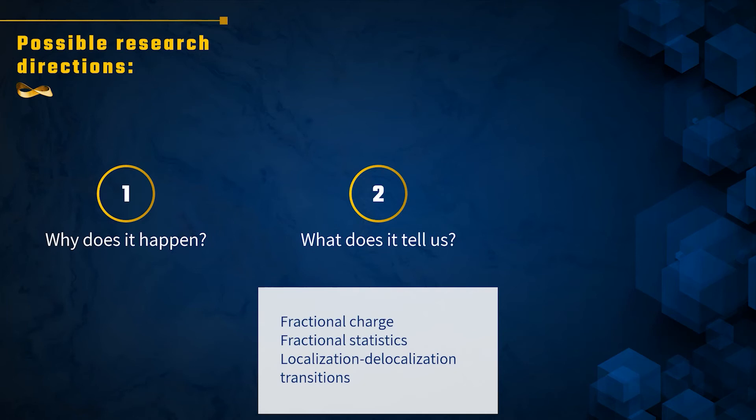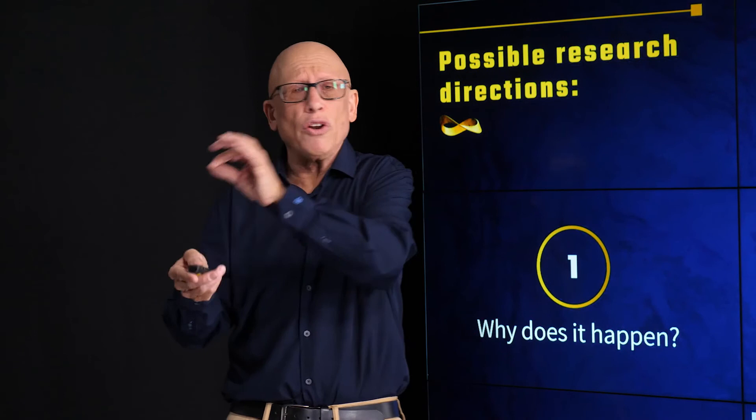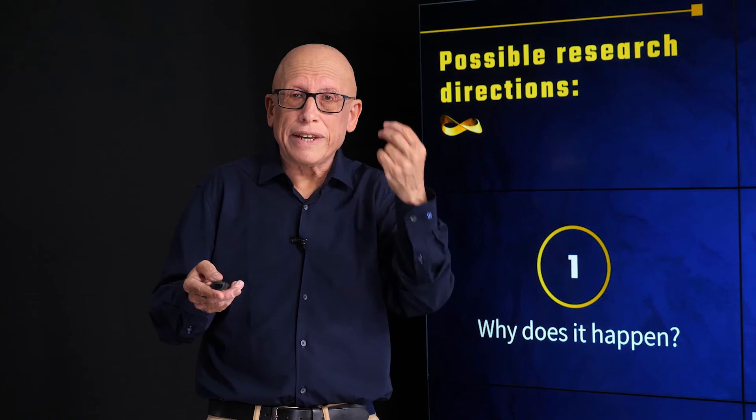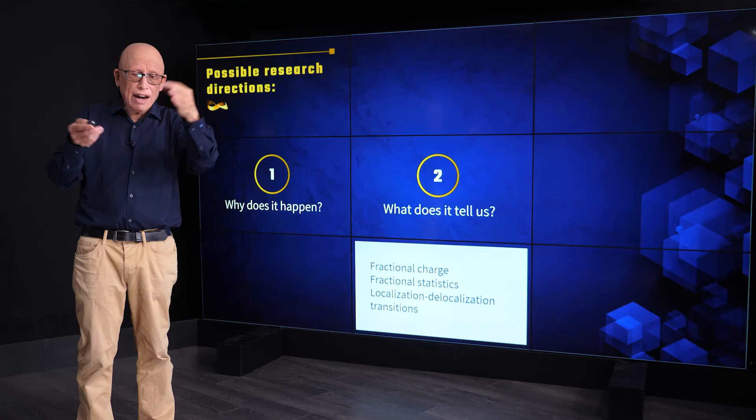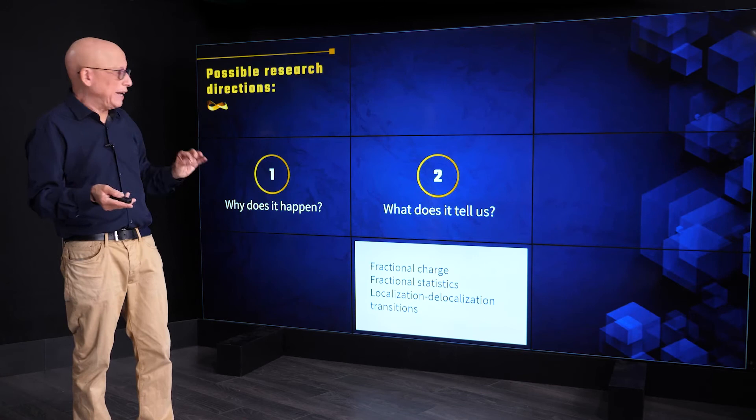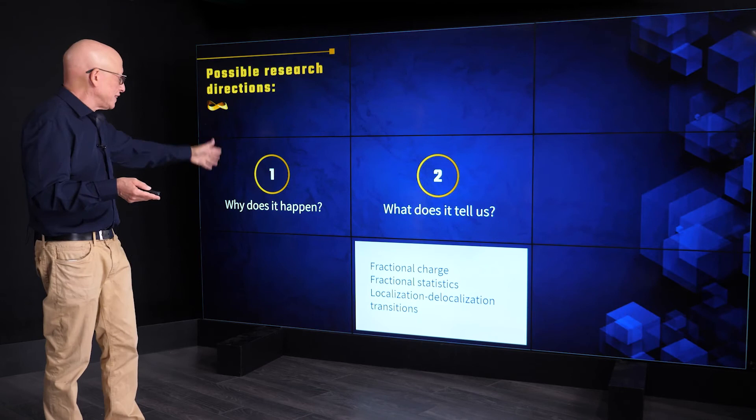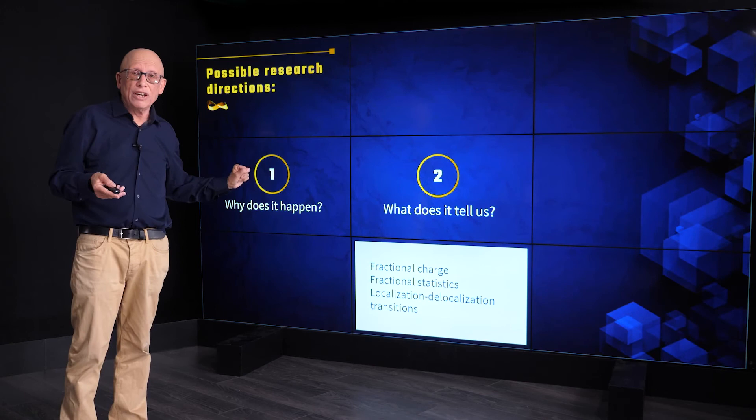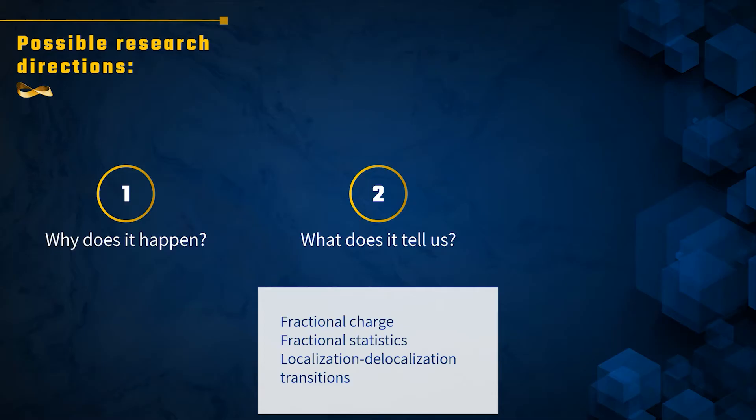It's seen in thousands of experiments. It happens. What we can try and understand is, what does it tell us? Combining this observation that we just saw with other things we know about physics, with charge conservation, with energy conservation, whatever, what conclusions can we obtain? And we will talk about that too. We will talk about fractional charge, we will talk about fractional statistics, and we will talk about implications of the effect on localization. All those we will discuss without even understanding why the effect occurs.